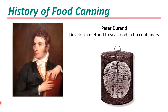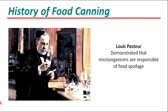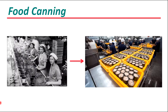Later, Peter Donan developed a method of sealing food in tin containers. This idea was improved by Brian Dawkin and John Hall who installed the first commercial cannery in England. Some years later, Louis Pasteur gave a reasonable explanation for canning effectiveness when he demonstrated that microorganisms were responsible for food spoilage. Gradually, the production of canned foods became mechanized and the developments associated with food canning continue today.